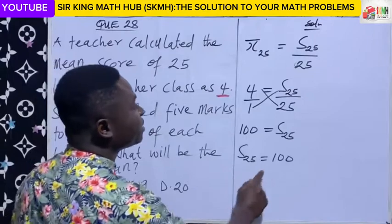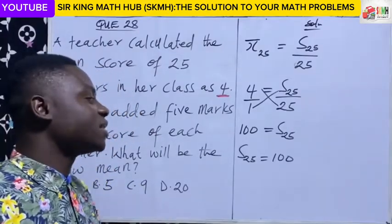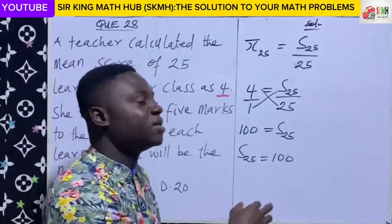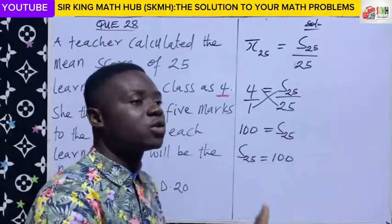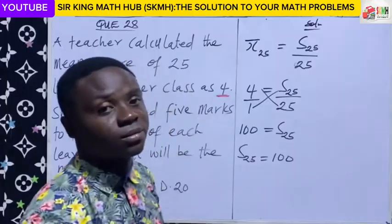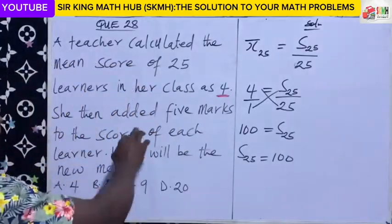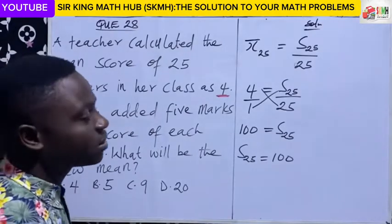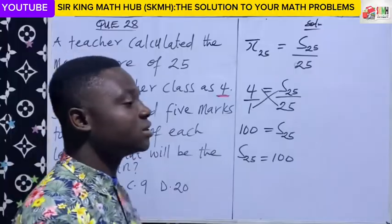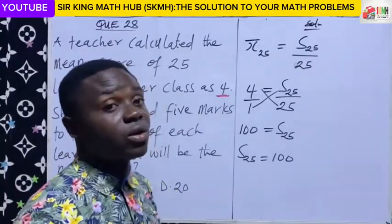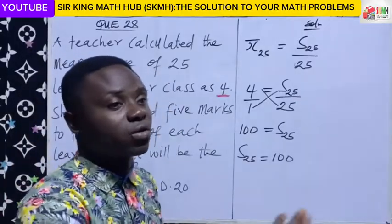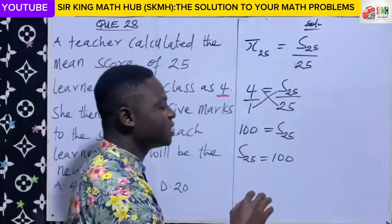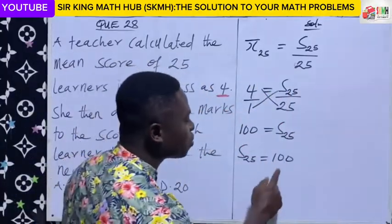This means that when we sum up the individual scores of the twenty-five learners, we get one hundred. Now, after calculating the mean, the teacher did something — she added five marks to the score of each learner. Perhaps the performance was very low, so she decided to add five marks across the board. Adding five marks across the board means their total score will increase.